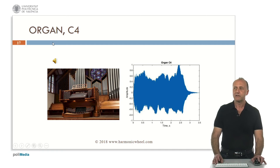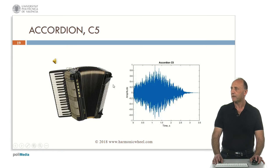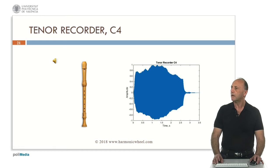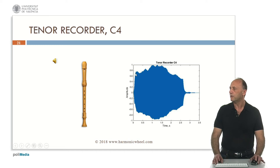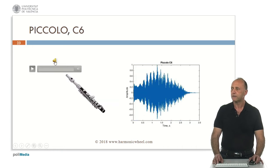This is an organ, C4 — the spectrum with many harmonics. An accordion, C5 — the envelope, the waveform, and the spectrum. Now a tenor recorder, C4, which is a woodwind instrument. The amplitude is practically very uniform. This is the waveform and the spectrum. The piccolo, C6, with a vibrato — this is the waveform and the spectrum.